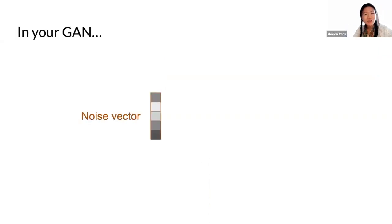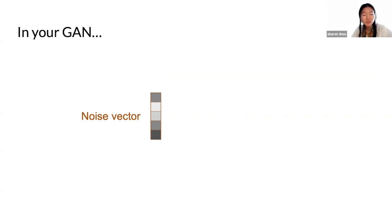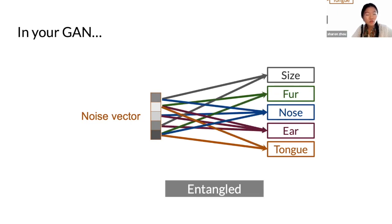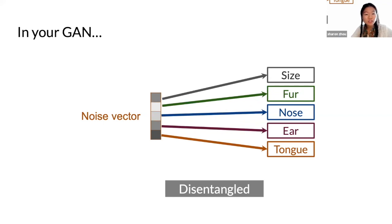More concretely, in your GAN, you have your noise vector in latent space — let's say this is your noise vector in five dimensions, where lighter values are smaller and darker values are larger. The dimensions of your noise vector correspond to some of those different features. In an entangled model, each dimension of your noise vector impacts a lot of different downstream features all at once. Versus in a disentangled model, each axis of your noise vector — each dimension — only adapts one of those major features while keeping the others untouched.